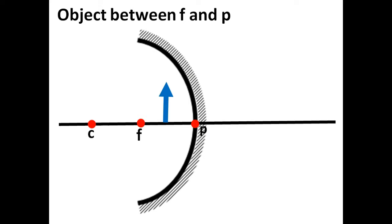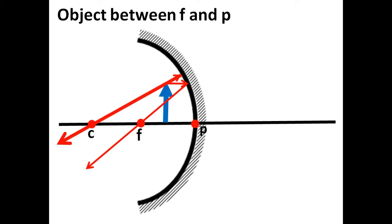A ray parallel to the principal axis will pass through the principal focus. And a ray passing through the center of curvature will return through the same path after reflection on the mirror. The reflected rays don't seem to meet — if you continue the lines in that direction, they will not meet. But if you continue the lines in the other direction, they will meet.